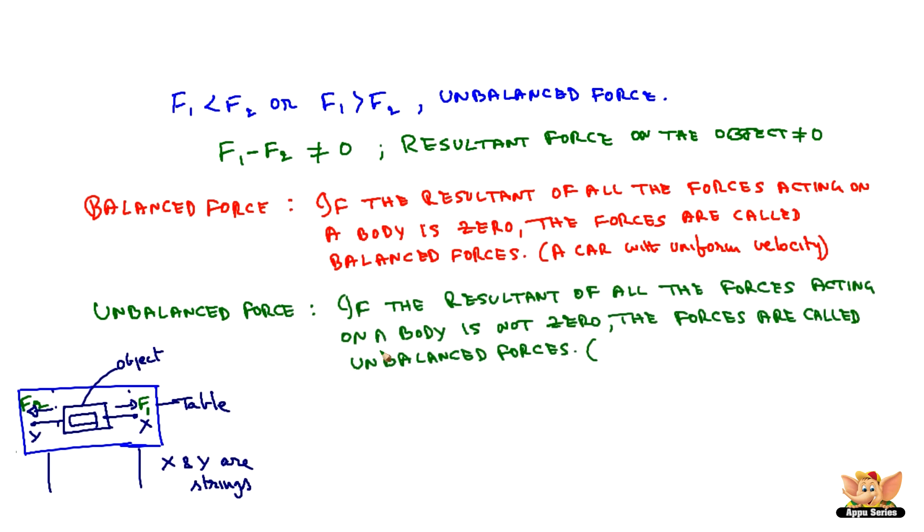If the resultant of all the forces acting on a body is not zero, the forces are called unbalanced forces. For example, to accelerate the motion of an object, we have to exert unbalanced force. Once the unbalanced force is completely removed from this object, then the object will be in uniform velocity. Then it will go back to the balanced force. So the unbalanced force is very important in our daily life moving objects.